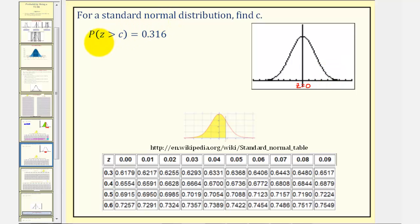So if we're trying to find the probability that Z is greater than C is equal to 0.316, we'd be finding the area to the right of a Z-score, and since the area is less than 0.5 and we're finding the area to the right, we should recognize that the Z-score would be positive.